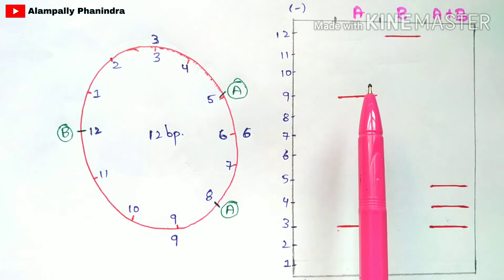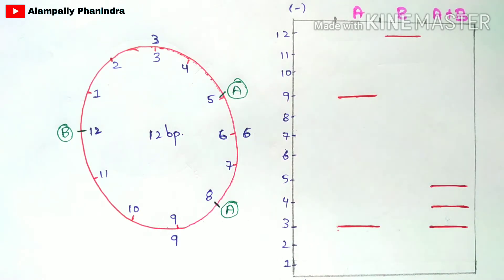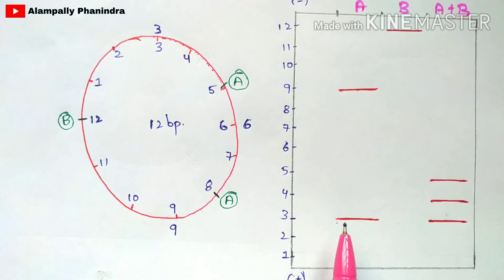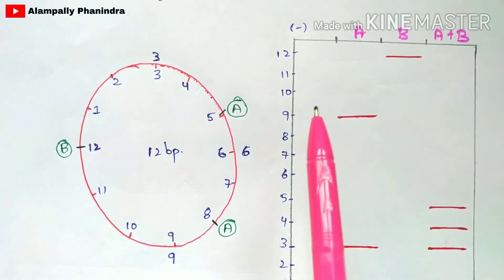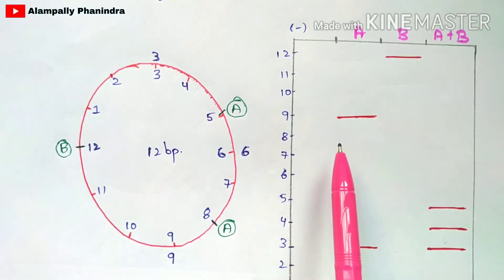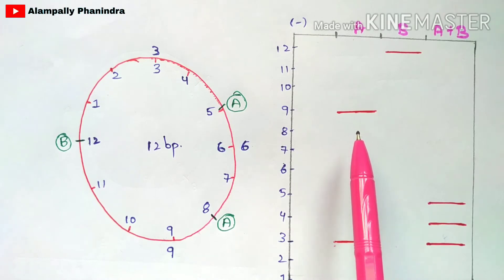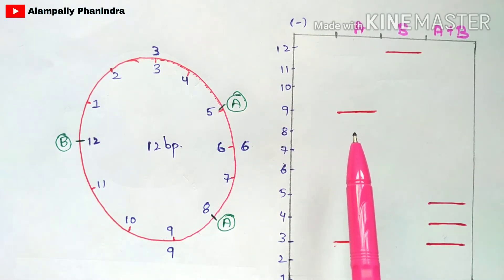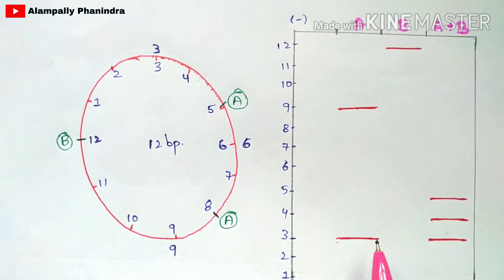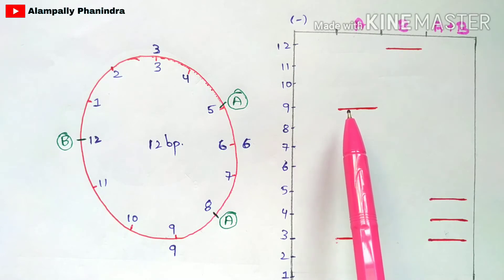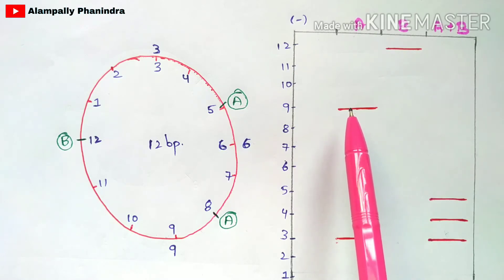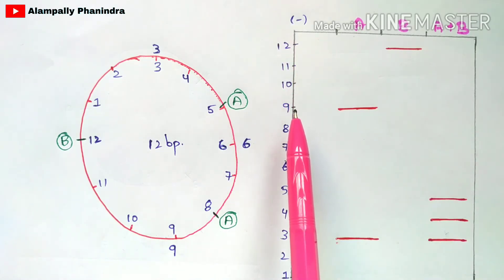An important point to remember: if the DNA fragment is small in size — meaning it consists of only a few nucleotide base pairs — then it can move faster towards the positive electrode. If the DNA fragment is large in size — meaning it consists of more nucleotide base pairs — then it cannot move as fast towards the positive electrode.